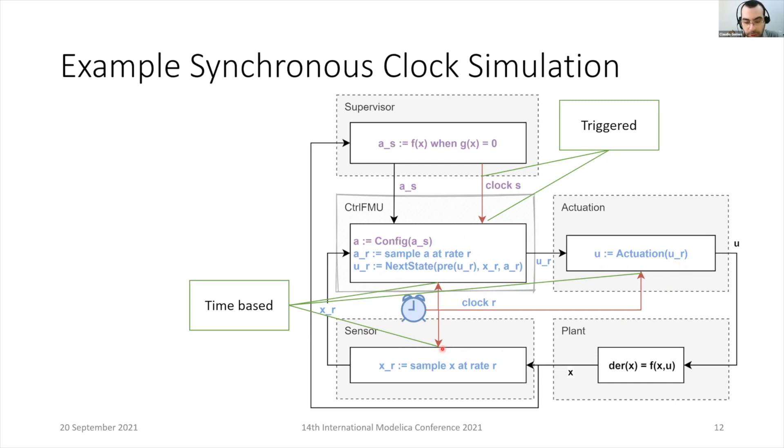Then the importer will activate all the three input clocks of each subsystem. And this means each subsystem or FMU knows exactly which equations to activate at any super dense time instant. That's the main benefit of using clocks.